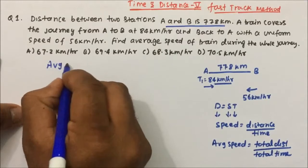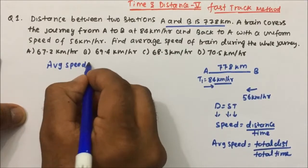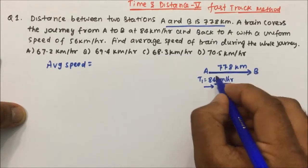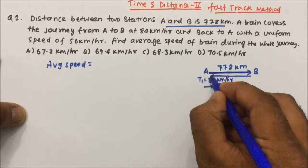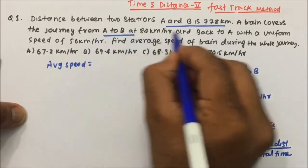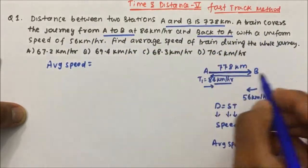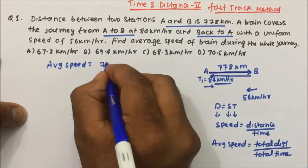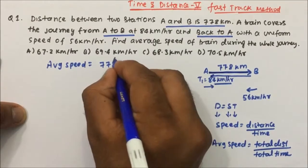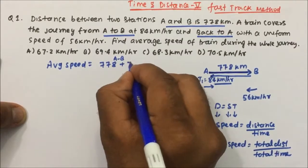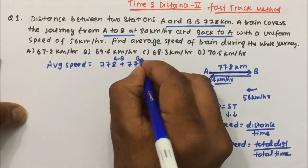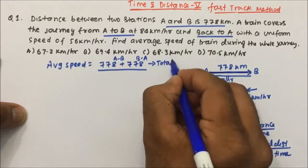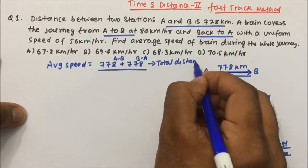Now, average speed equals total distance divided by total time. The train is going from A to B and then coming back from B to A. They have clearly mentioned the journey from A to B and back to A. So the train covers 778 km from A to B and then 778 km again from B to A. So total distance is 778 plus 778.